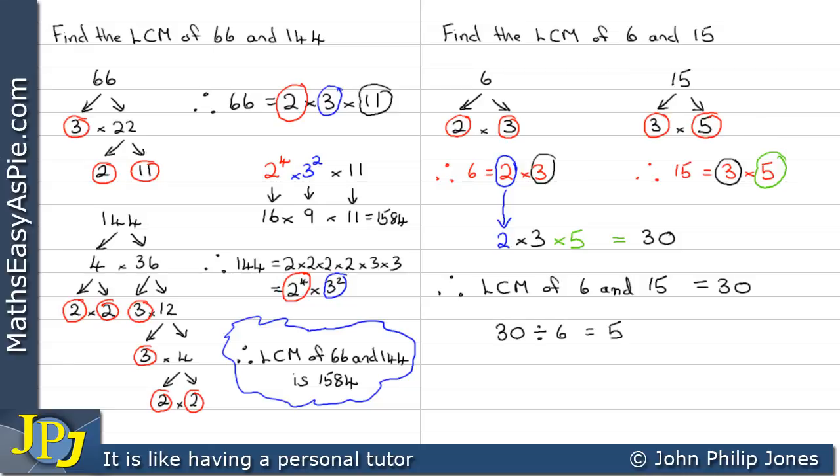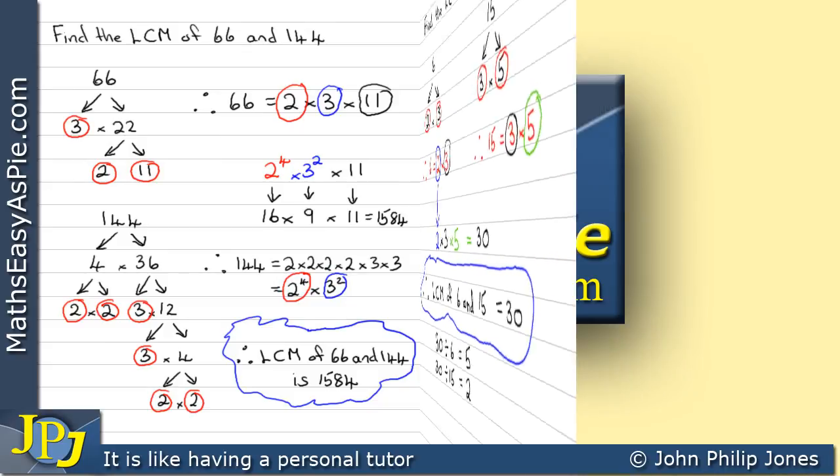And we can just do a quick division to show that it's, in fact, a multiple. But we've just worked out that 30 is the lowest common multiple of 6 and 15.